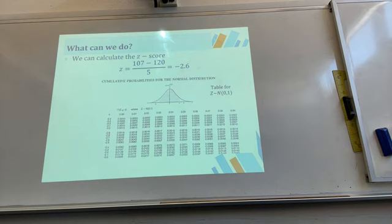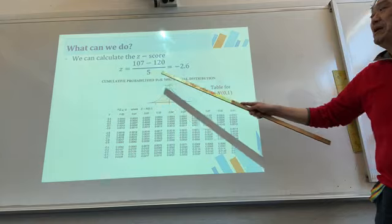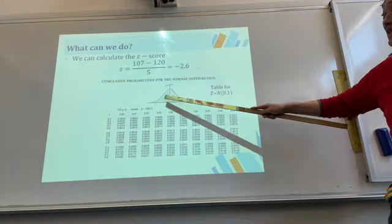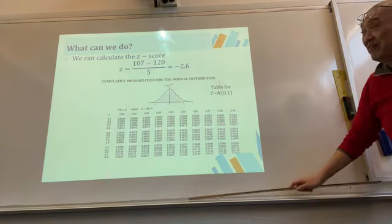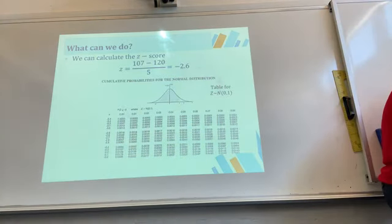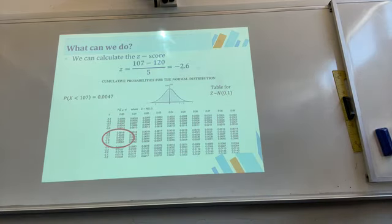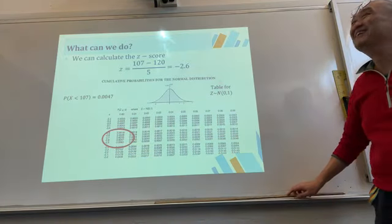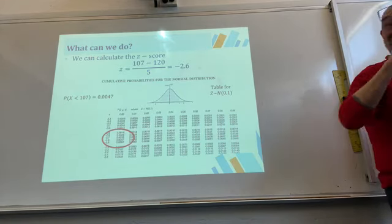In the past, you would calculate the z-score and look it up in a standard normal distribution table. The table gives cumulative probabilities — from negative infinity up to a given z-score. For example, z = -2.6 gives probability 0.0047. Reading these tables was tedious and error-prone.